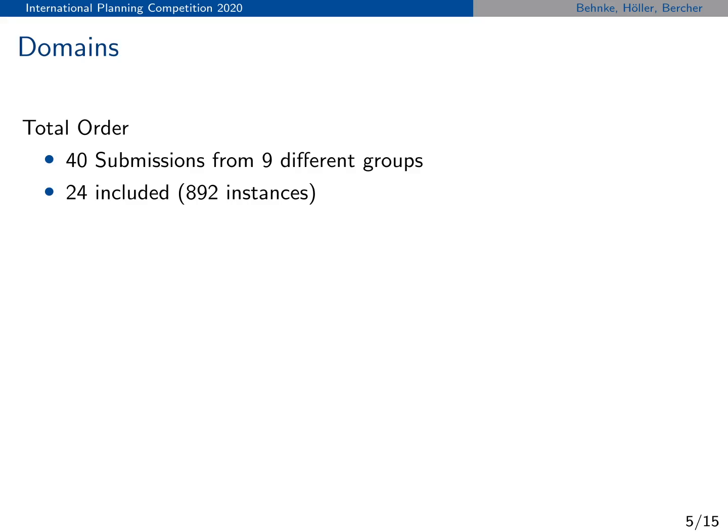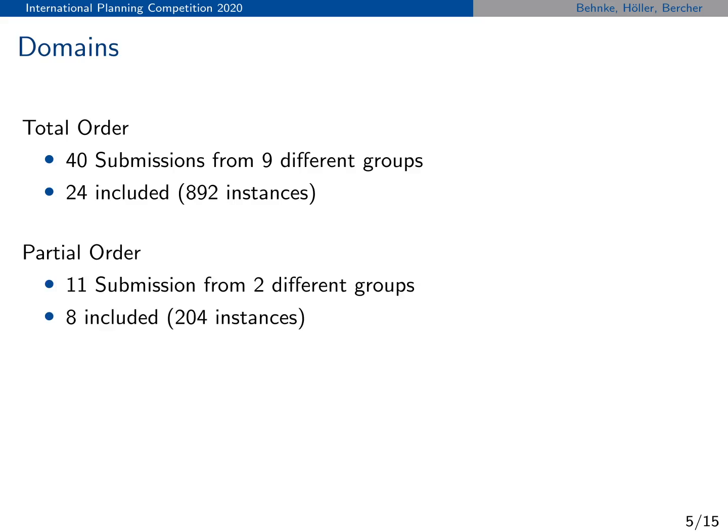We elicited domain submissions from the community. For the total order track we got in total 40 submissions of domains from nine different groups, of which we included 24 in the IPC with 892 instances in total. We excluded some due to duplicate submissions — for example, we now have three different versions of BoxWorld — and some domains were just too hard or too easy for all the planners. For the partial order track we only got 11 submissions from two different groups, of which we included eight in total, again excluding duplicates, with 204 instances in total.